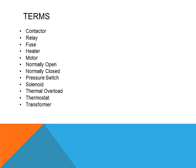Some of the terms you need to go over this week to understand symbols better include: contactor, relay, fuse, heater, motor, normally open, normally closed, pressure switch, solenoid, thermal overload, thermostat, and transformer.